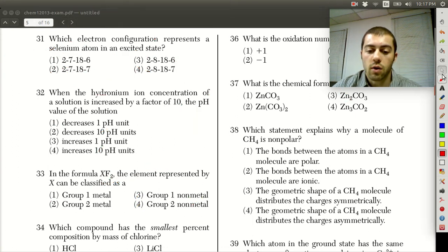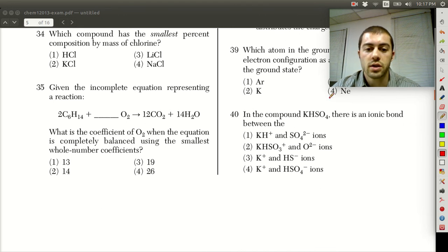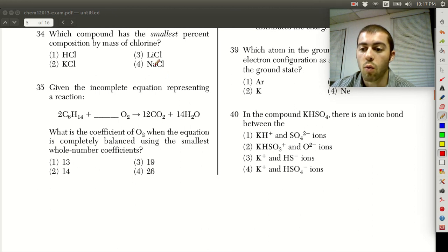Looking at question 34, which compound has the smallest percent composition of chlorine? These all have chlorine. They all have one chlorine atom in them, or chlorine ion in these cases. So which has the smallest percent chlorine is going to be which has the largest percent of the other element. We just want to see we have one each of these other elements that go with the chlorine. We have hydrogen, potassium, sodium, and lithium.